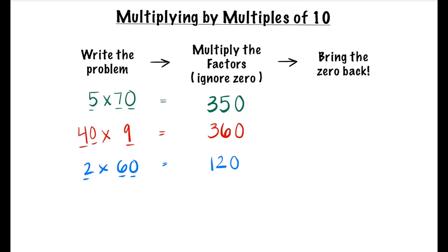Let's write the problem: 8 times 90. We know 90 is a multiple of 10, so we're going to multiply the 8 and the 9, which equals 72. Now let's bring the 0 back. We know 8 times 90 equals 720.